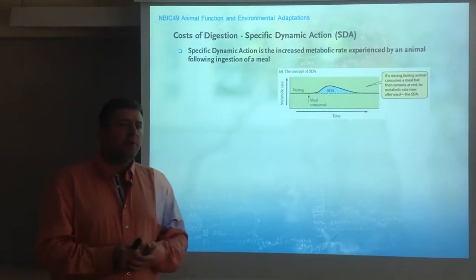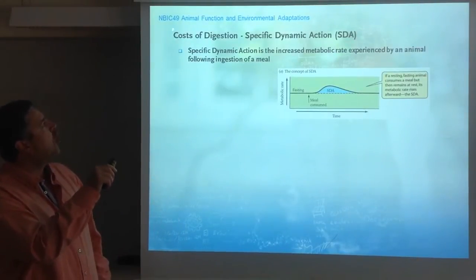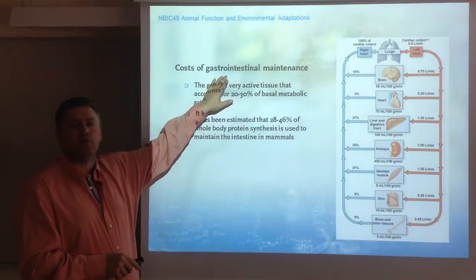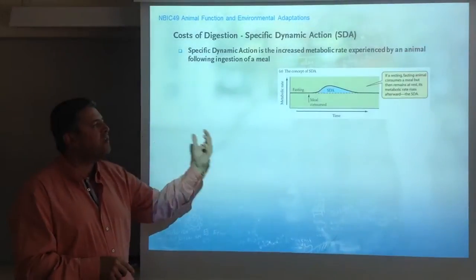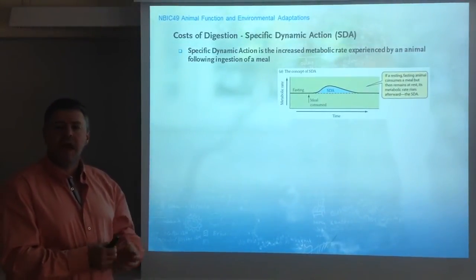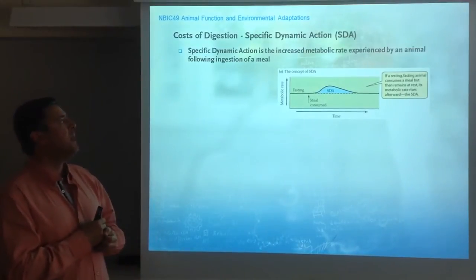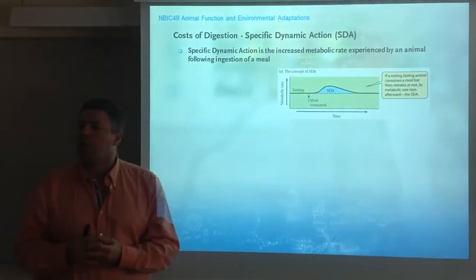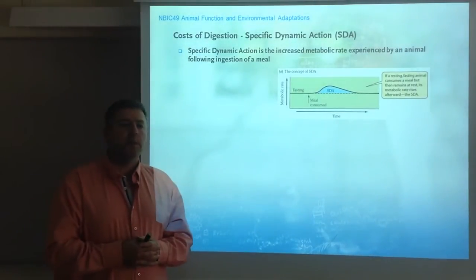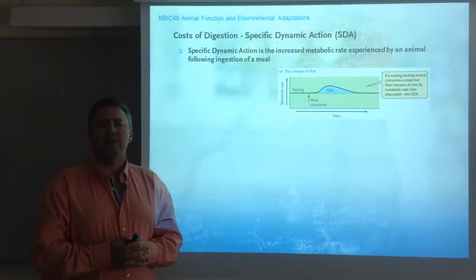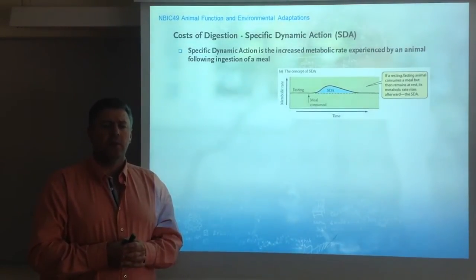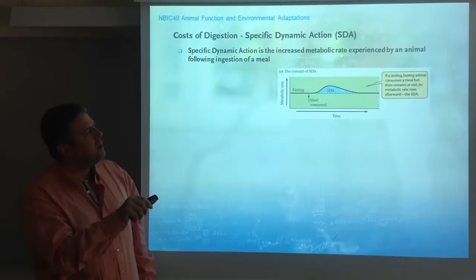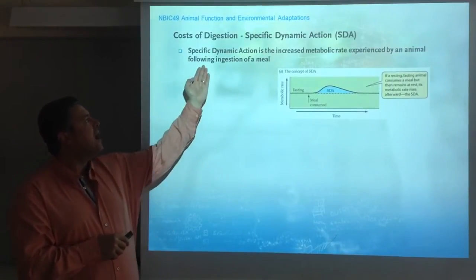This brings us to the concept of costs of digestion. Previously I talked about how much it costs to keep the gastrointestinal tract; the next step is how much does it cost to digest and obtain energy from the food. This is what's called a specific dynamic action, or SDA. SDA is an extremely common term in physiology. It's also a somewhat misleading term kept for historical reasons. Specific dynamic action is the increased metabolic rate that an animal shows after ingesting a meal.